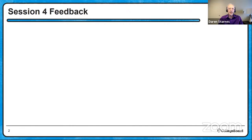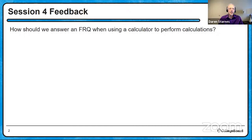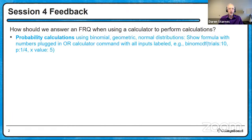Here's some response to feedback from session four. A student asked: how should we answer a free response question when using a calculator to perform calculations? On the free response, I've broken my answer into two parts. If the question asks you to do a probability calculation like binomial, geometric, or normal distribution, you can either show the formula with numbers plugged in, or use the calculator command with all inputs labeled — for example, binomCDF, trials 10, p 1/4, x value 5. You have to label all those inputs, and that counts as your work.